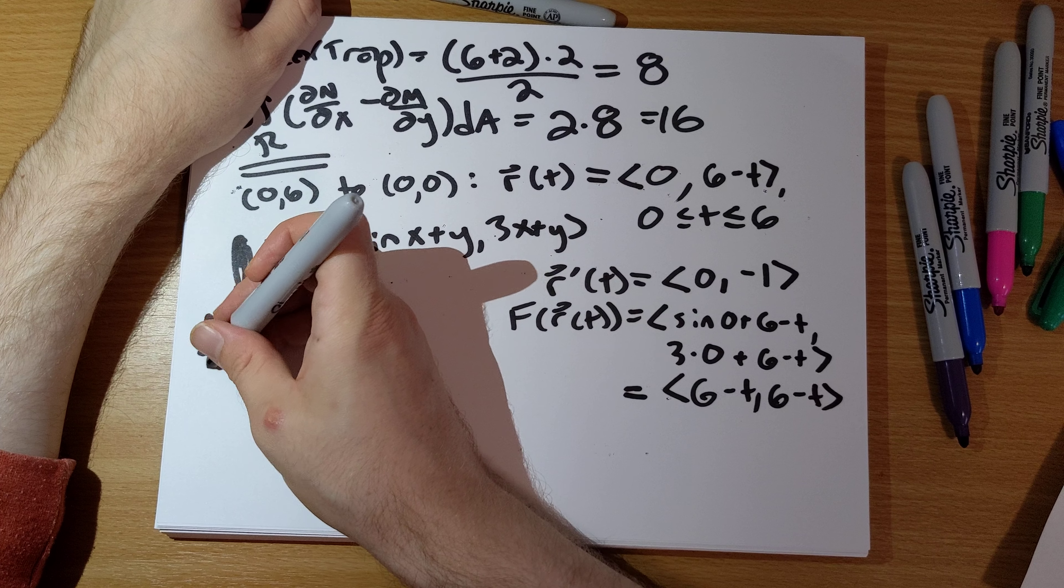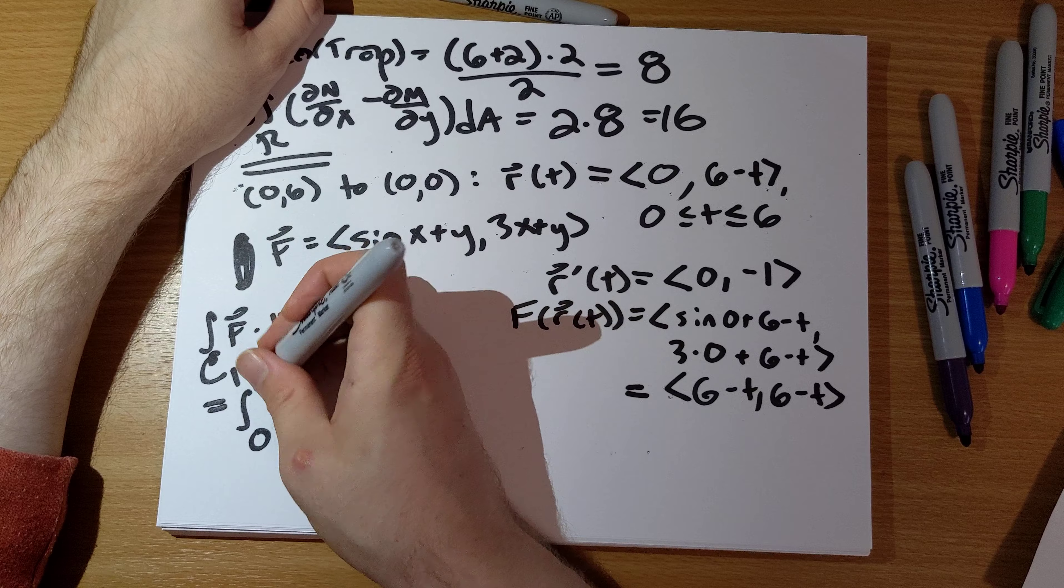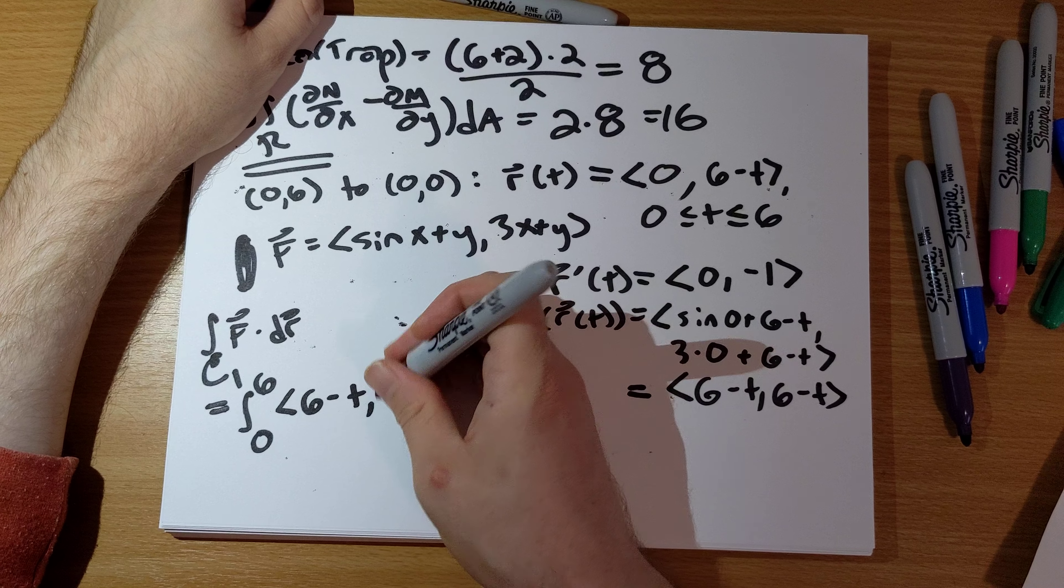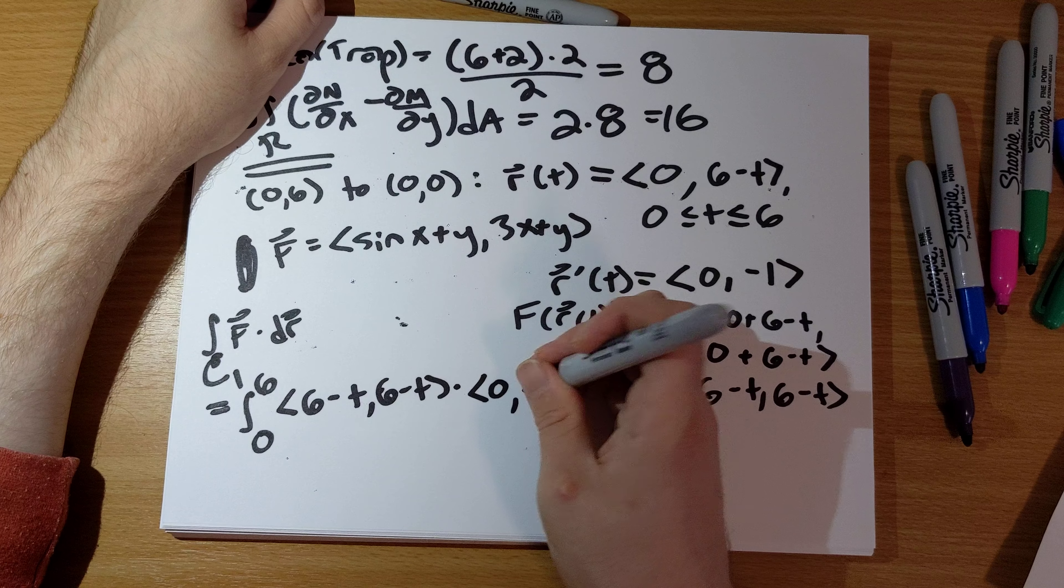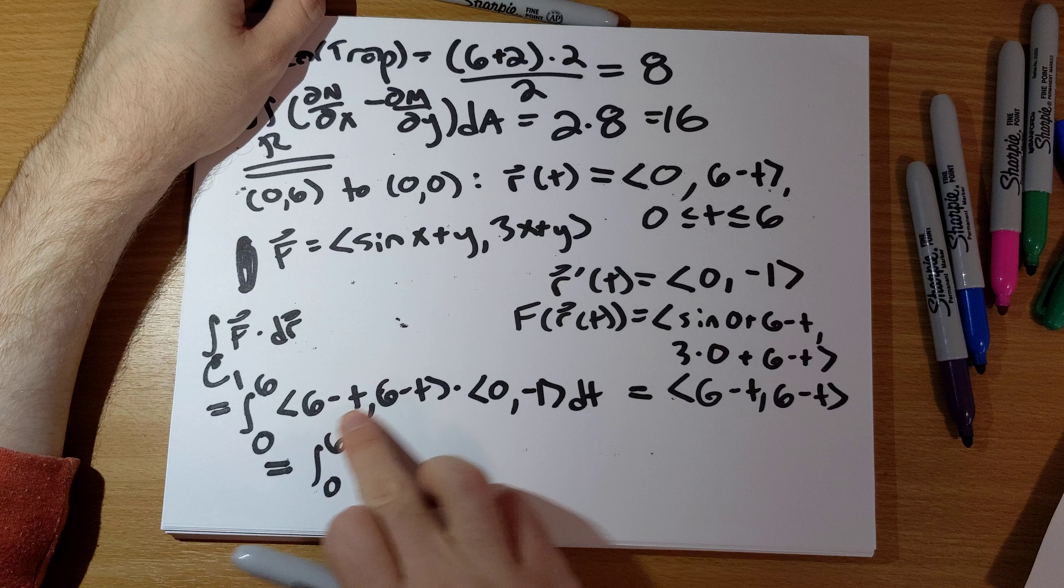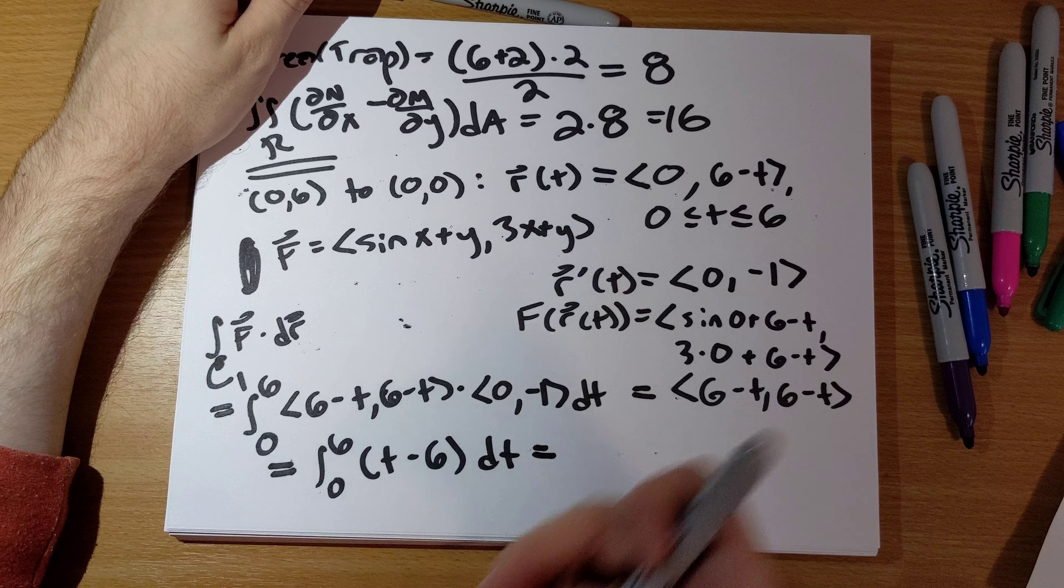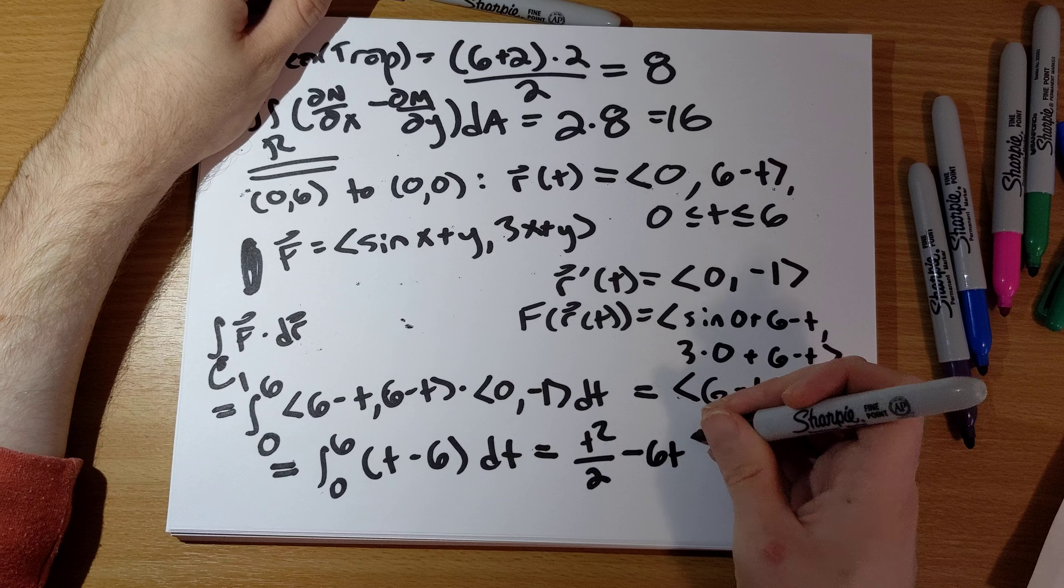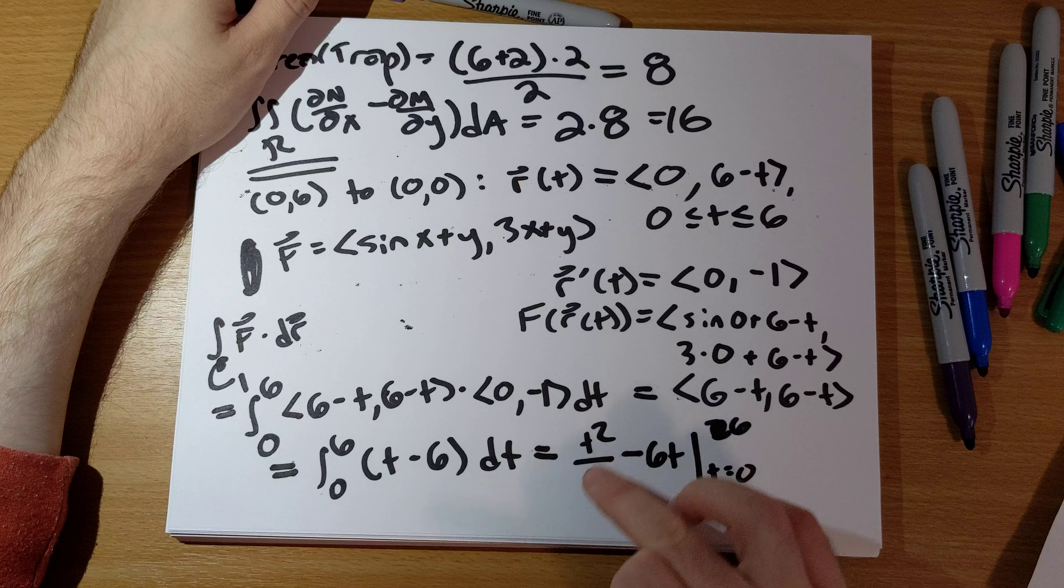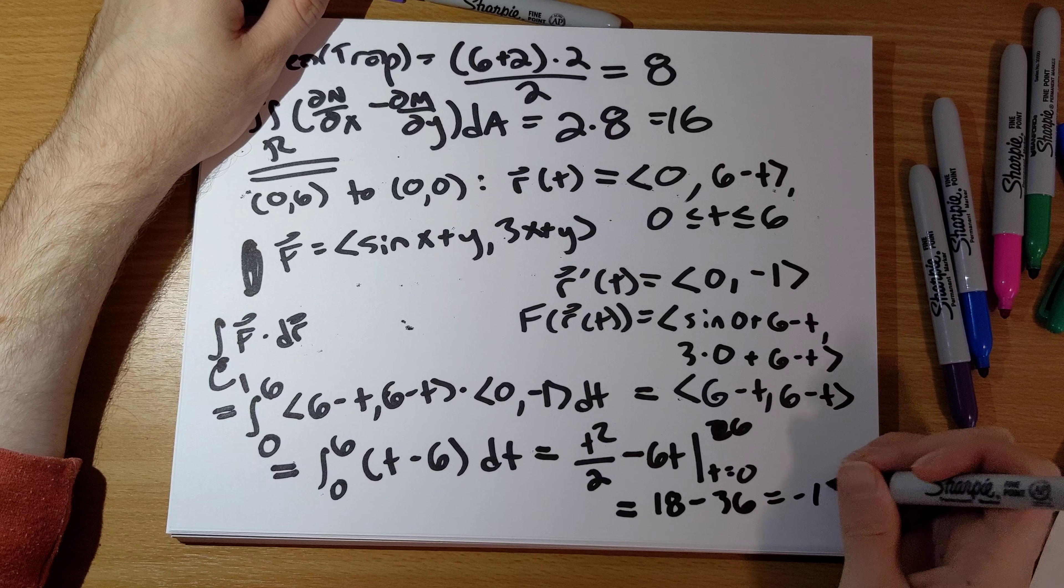The vector line integral over C1 of f·dr equals the integral from t=0 to 6 of f(r(t))·r'(t) dt. This is sine(6-t), (6-t) dot (0,-1) dt. The dot product gives us -(6-t) = (t-6) dt. Integrating: t²/2 - 6t from 0 to 6. Plugging in, we get 36/2 - 36 minus 0, which is -18.